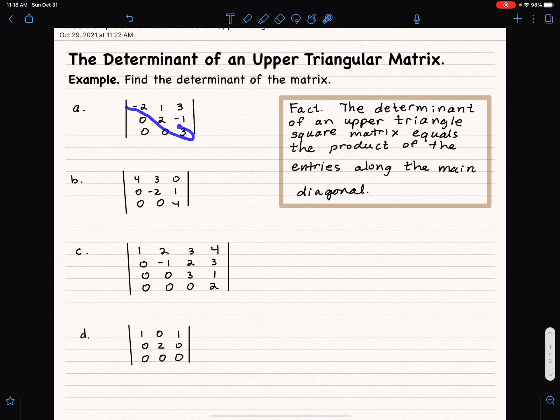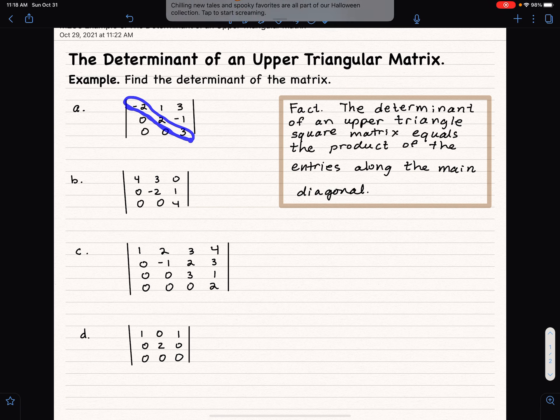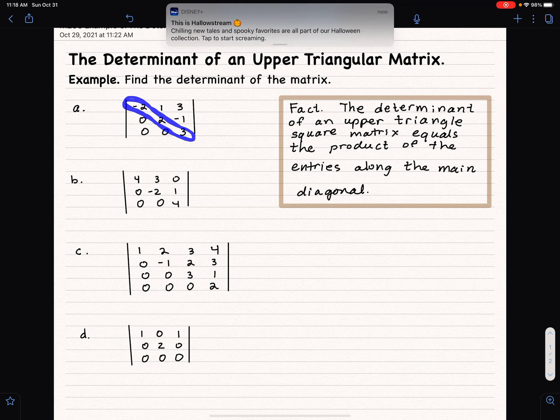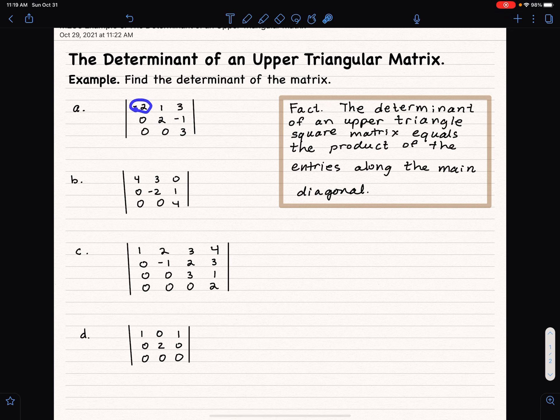The main diagonals are the ones that I'm putting a thing around here. It's those entries where the 1-1 entry, the 2-2 entry, the 3-3 entry, those where the row and column number are the same. That's the main diagonal.